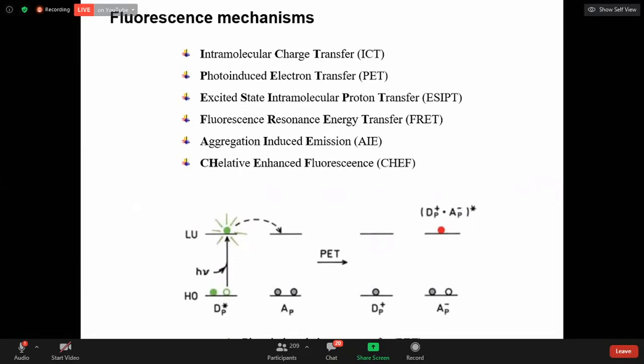First one is photoinduced electron transfer. Photoinduced electron transfer means here the molecule, donor molecule, which is exposed with the light, and it goes to excited first singlet excited state. After that the acceptor accepts the electron and it goes down and it emits the fluorescence.